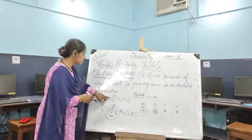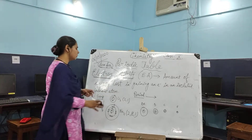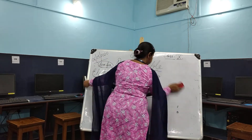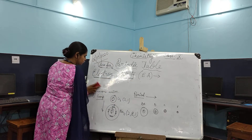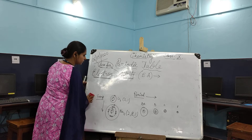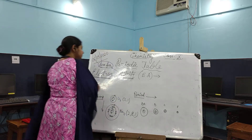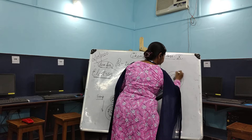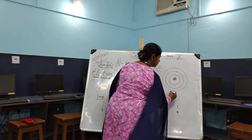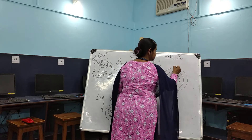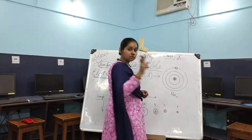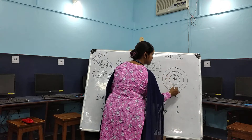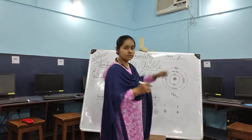Let me show you the electronic arrangement for the sodium element. Look very carefully. This is for the sodium element. It is having one valence electron in the last shell, two electrons in the inner shell, followed by eight electrons in the next shell, and the last shell is having one electron.